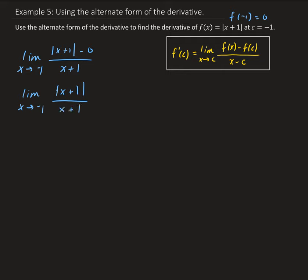We need to find the left and right-hand limit for this function. Let me go ahead and graph this to give you an idea of what this function looks like. We have the y-axis and x-axis. The absolute value of x plus 1 is basically just the absolute value of x shifted over to the left by one point, giving us the V-shape centered at negative 1.